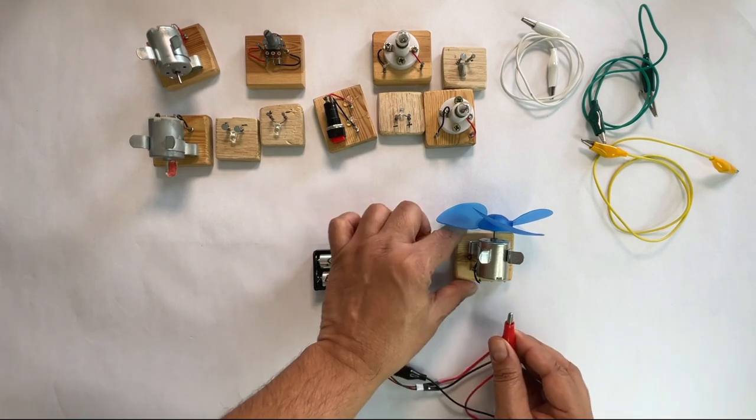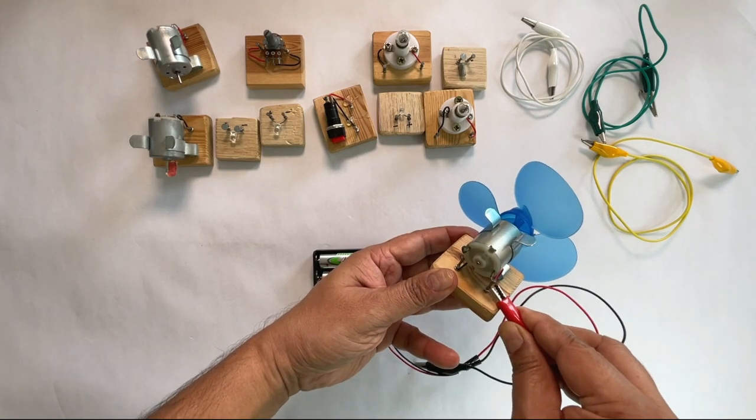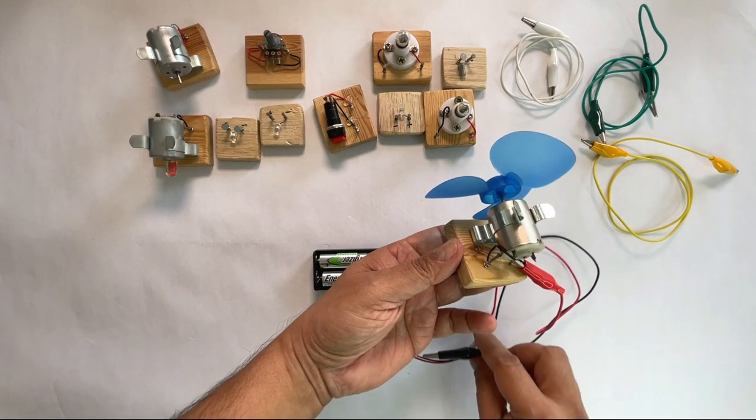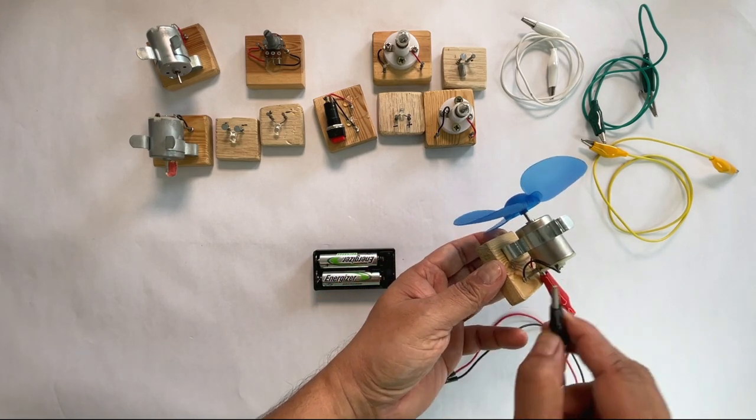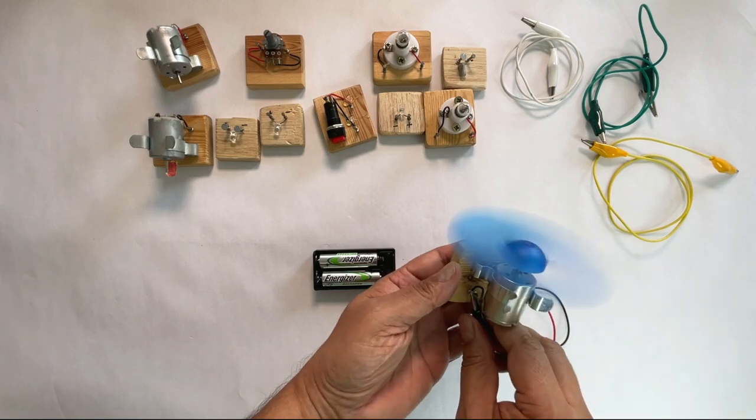Connect the positive terminal of the battery to one of the terminals of the motor. Connect the negative terminal of the battery to the other terminal of the motor. The motor starts to rotate.